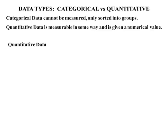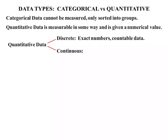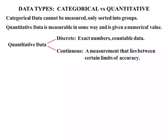Quantitative data can be broken up two ways: one, discrete, and two, continuous. When we're talking about discrete, we're talking about exact numbers — countable data. Whereas continuous is a measurement that lies between certain limits of accuracy.